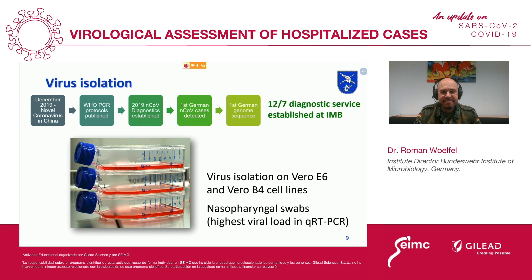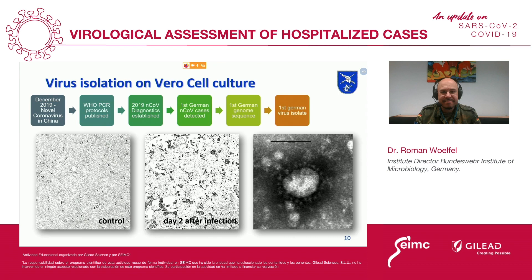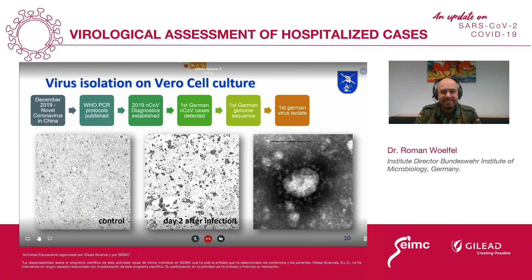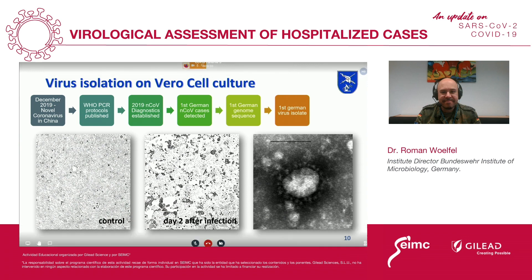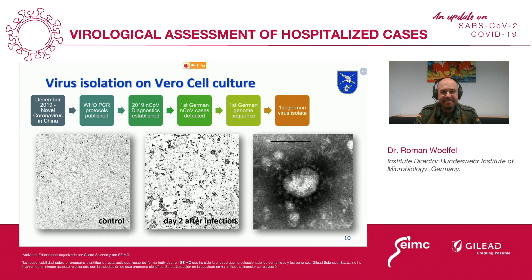We were also able to isolate the virus based on the primary sample on VeroE6 cells from the nasopharyngeal swabs from the same patient. As you can see here in the center, the virus is quite cytopathogenic — it kills the cells quite rapidly. We also took this electron microscopic image from the virus.